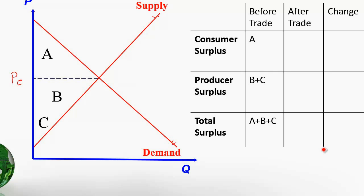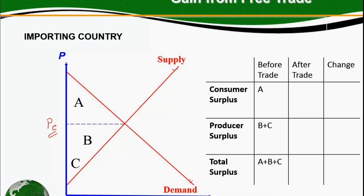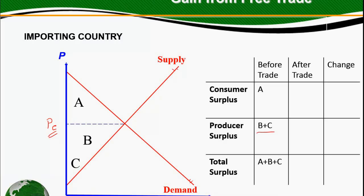Given this equilibrium price, what are the consumer and the producer surplus? The consumer surplus is the area below the demand function and above the equilibrium price, which is PE in this case, so consumer surplus is A. The producer surplus — we've divided this region into two parts — is the area above the supply function and below the equilibrium price, so it's given by B plus C. The total surplus for this country is A plus B plus C.